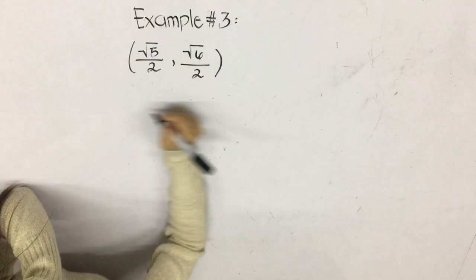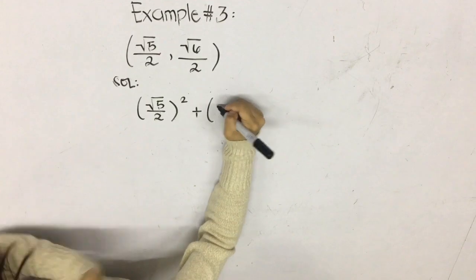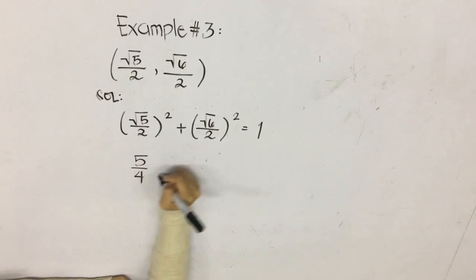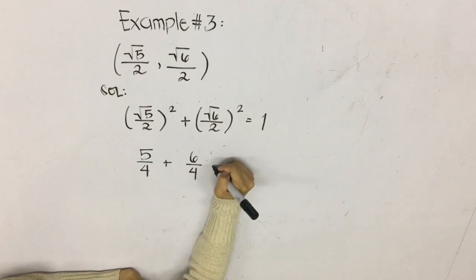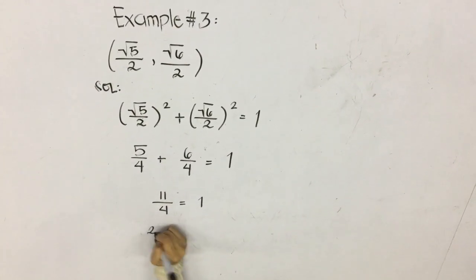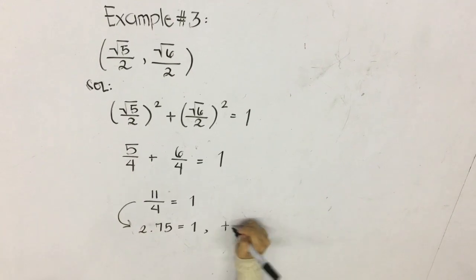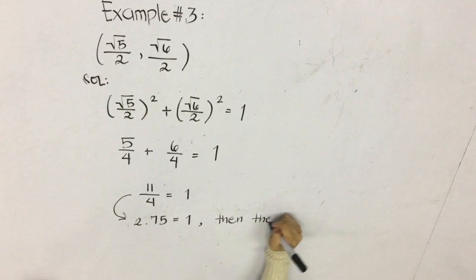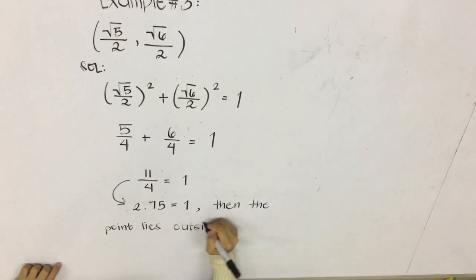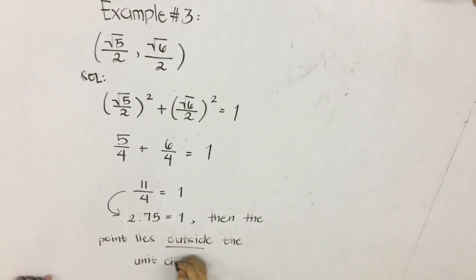For our last example: square root of 5 over 2, squared, plus square root of 6 over 2, squared. Square root of 5 over 2 squared gives 5 over 4, and square root of 6 over 2 squared gives 6 over 4. Adding the numerators with the same denominator gives 11 over 4. In decimal, 11 over 4 equals 2.75, which is greater than 1, so the point lies outside the unit circle.